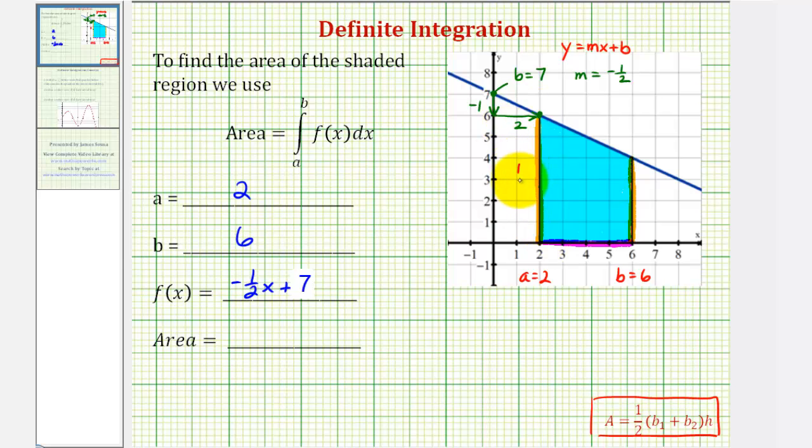So b sub one would be six units, b sub two would be four units, and the height would also be four units. The area of the shaded region would be equal to one-half times the sum of the two bases, which would be six plus four, times the height, which is four. We have one-half times ten, that's five, five times four is twenty.